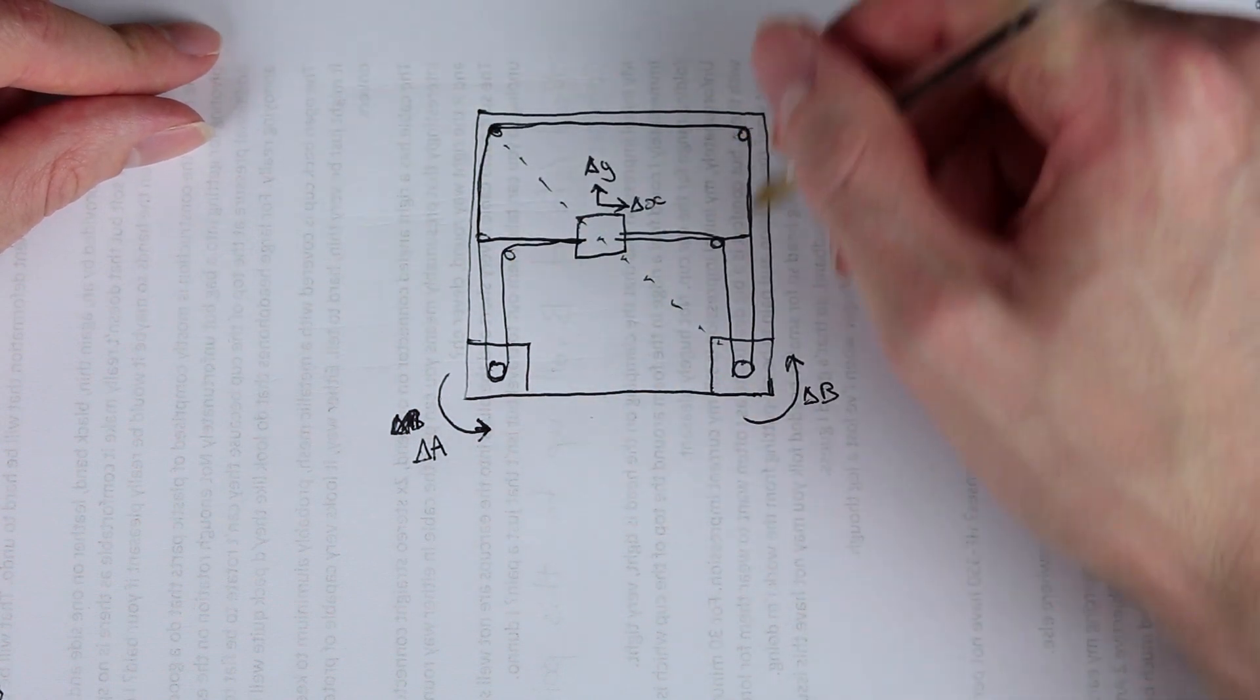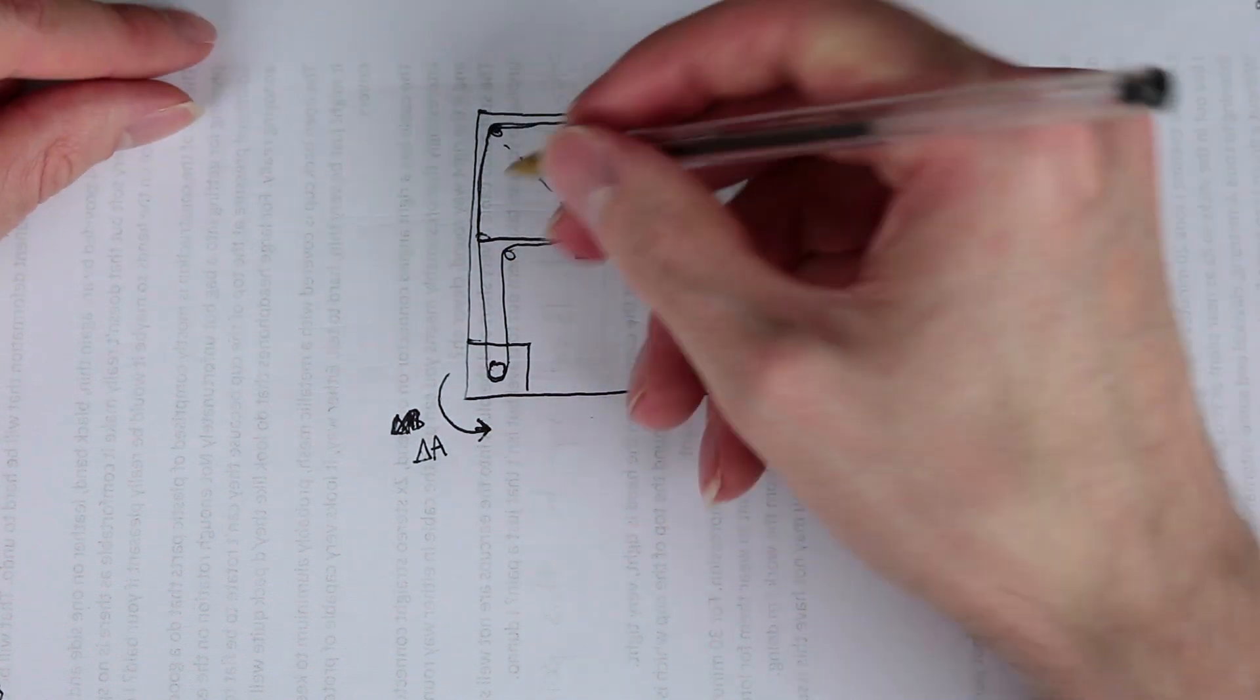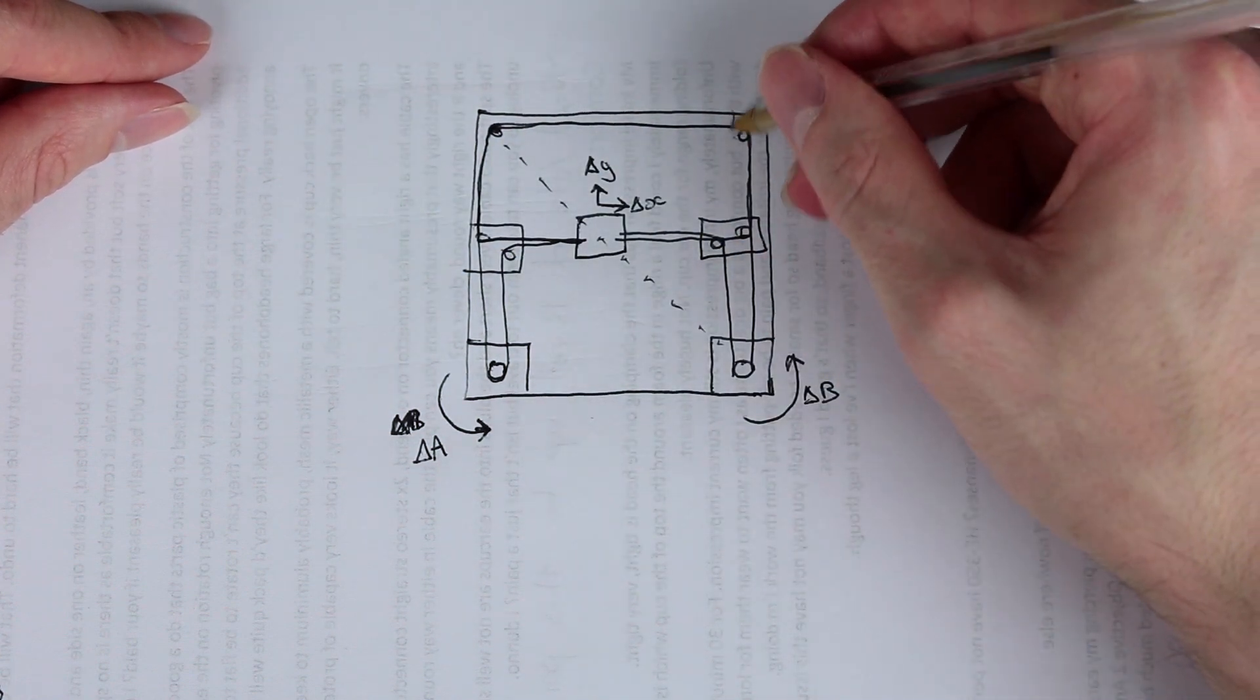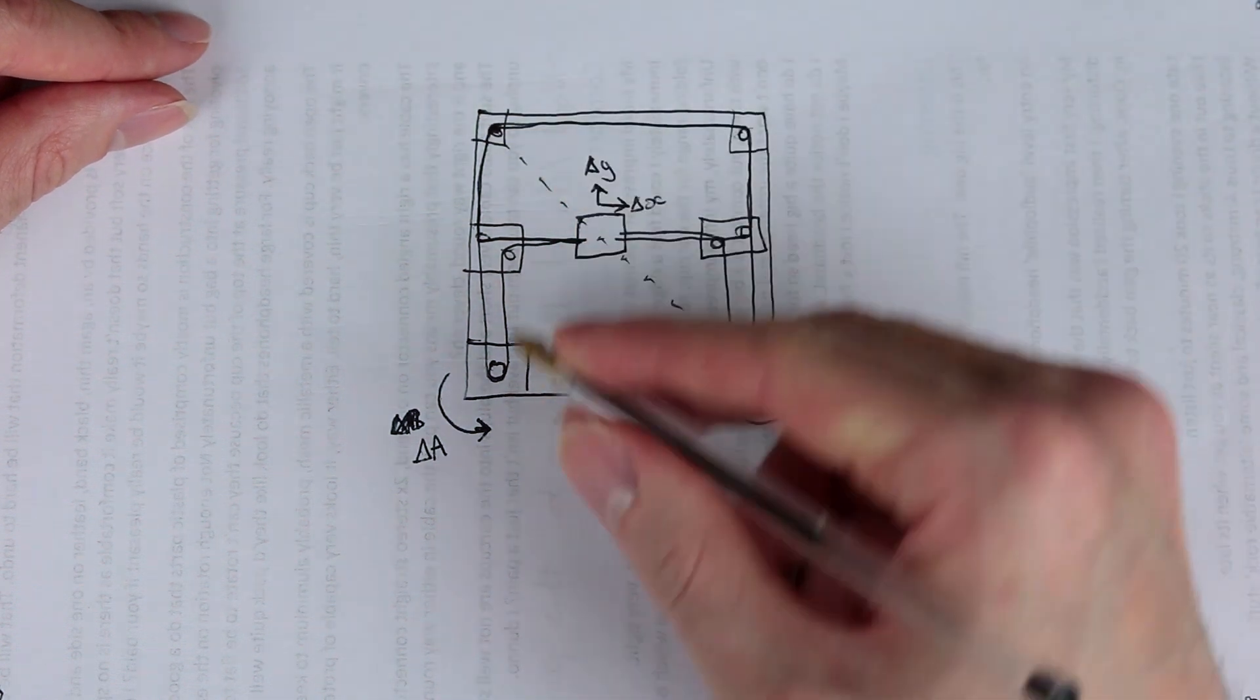It gets a little bit messy when you start drawing all these things all over the place, but this would be your XY joiner, this would be your XY joiner, this is an idler, this is an idler, and these are your two steppers.